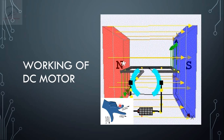Now let us apply Fleming's left hand rule for the diagram shown here. The direction of the field is given by the forefinger, and the direction of the current is into the plane, given by the center finger. As per this rule, the direction of force which this particular conductor will experience is downwards, indicated by the green mark, which is given by the thumb finger.